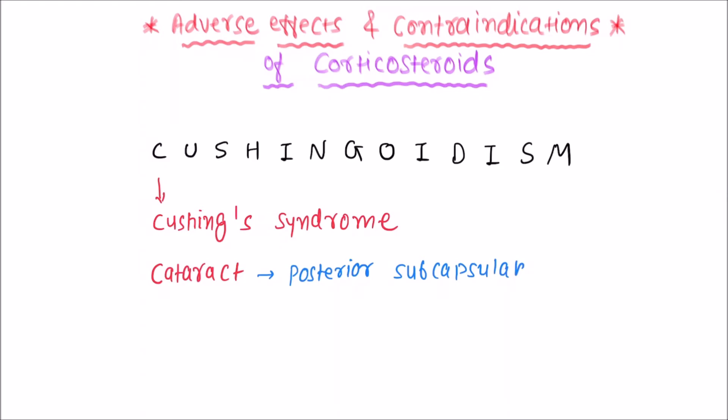Now from U, we can remember ulcer. So there is one contraindication, that is peptic ulcer. The glucocorticoids can cause silent perforation, that is very dangerous.